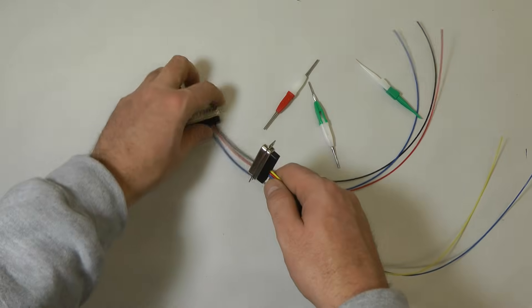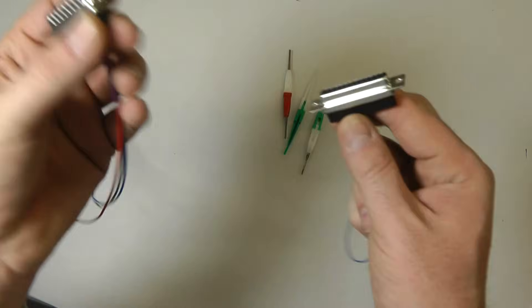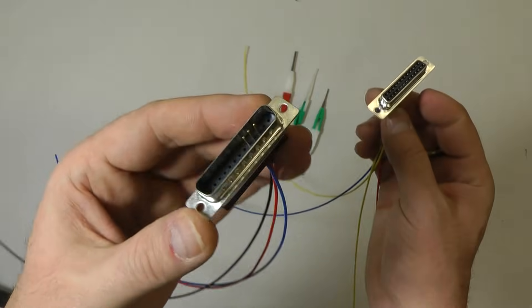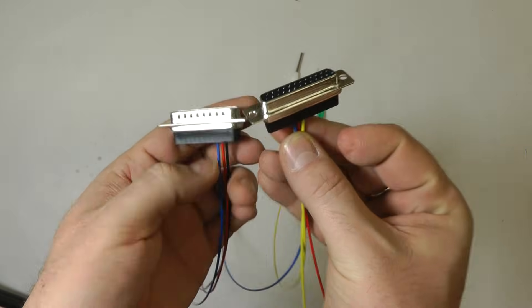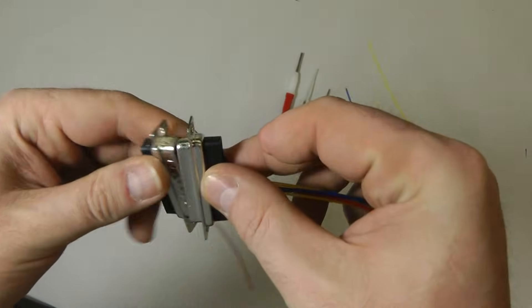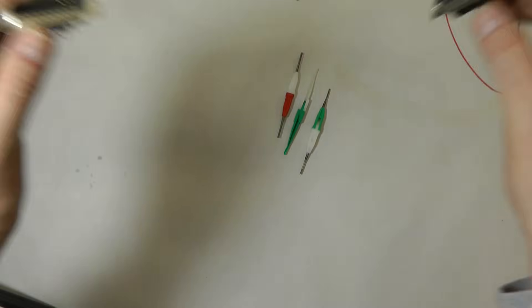So these are the D-Sub connectors, and we talked about the genders of the connectors. We have a male here, which is the one with the actual pins inside of it, and we have a female here, which is the ones with the actual sockets inside of it. And they just go together, standard, like normal D-Sub pins.